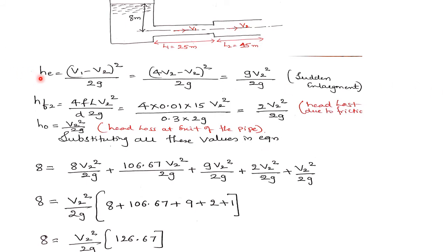Loss of head due to sudden enlargement is given by (V₁ - V₂)² / 2g. Substituting V₁ = 4V₂: (4V₂ - V₂)² / 2g = (3V₂)² / 2g = 9V₂² / 2g. Loss of head due to friction in pipe 2 is hf₂ = 4fLV₂² / (D × 2g) = 4 × 0.01 × 15 × V₂² / (0.3 × 2g), which simplifies to 2V₂² / 2g.